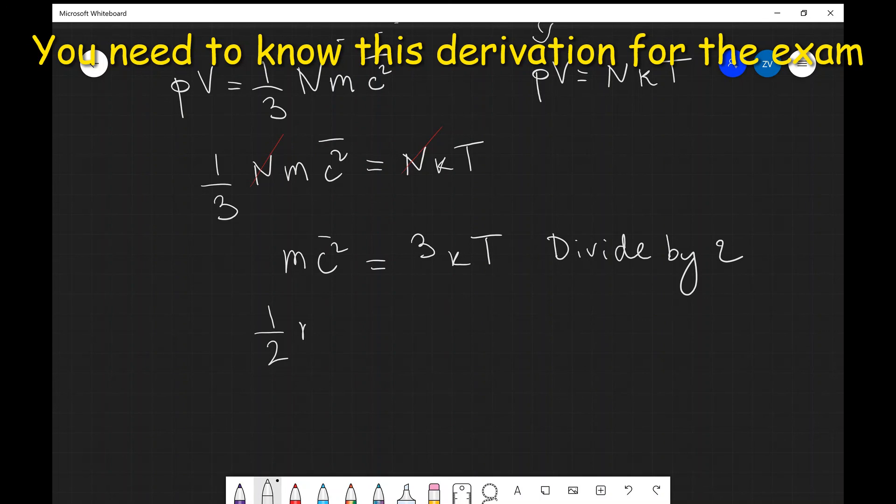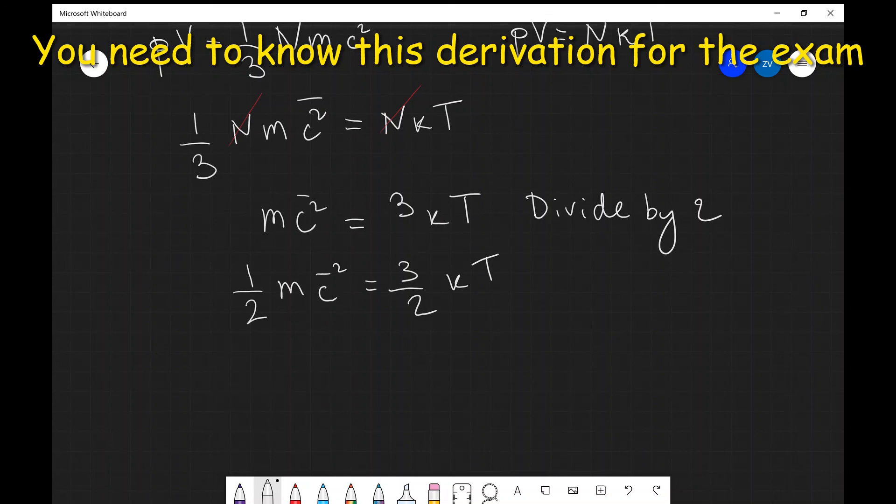So what I'm going to get is one-half m times the mean square speed c̄² is going to equal three halves KT. And this is actually the equation which links directly temperature to the mean square speed, and we've managed to derive this relationship from some of the basic equations of kinetic theory.